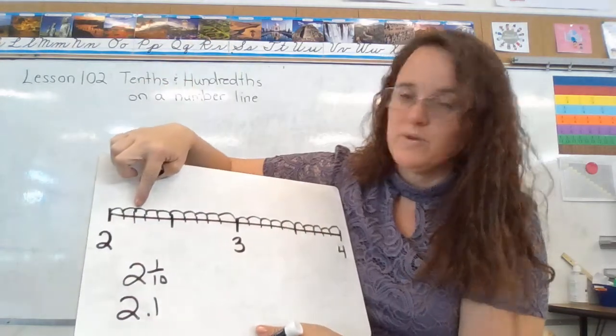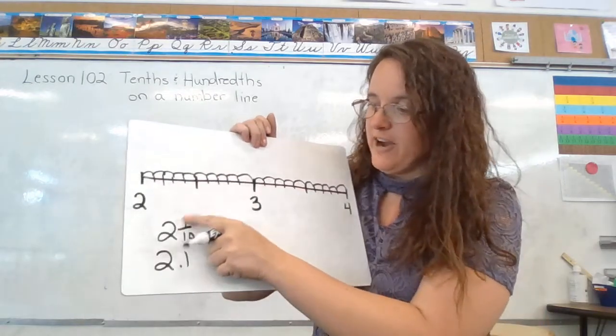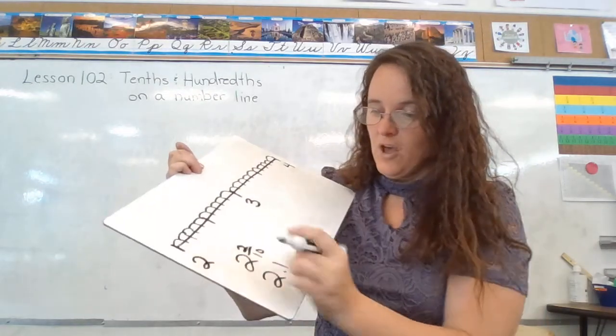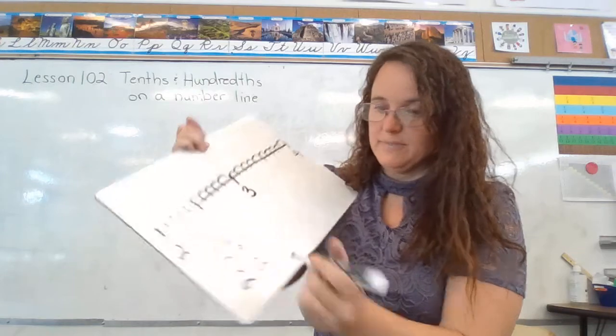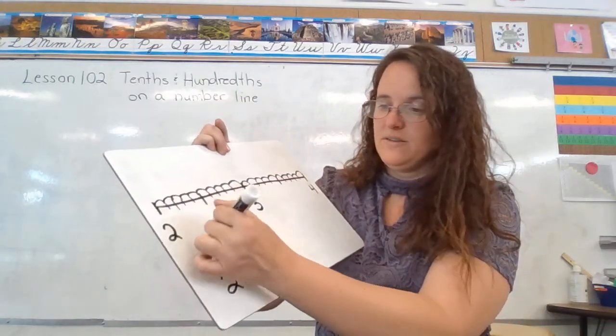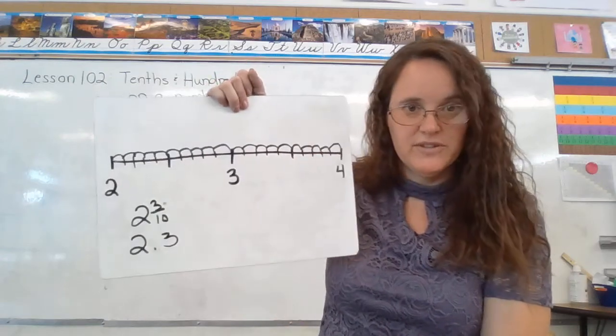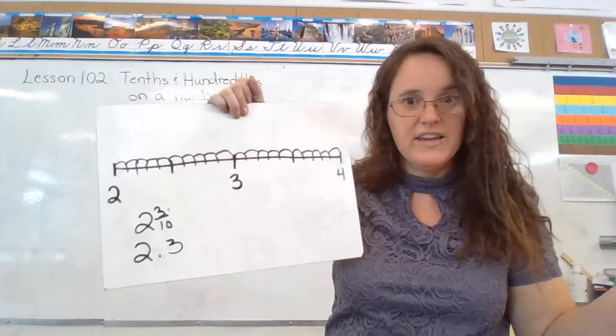So then here for the second one, we would say two and two-tenths. I could write that as a fraction, or I could write that as a decimal. Two and three-tenths would be the next notch. Fraction, decimal.